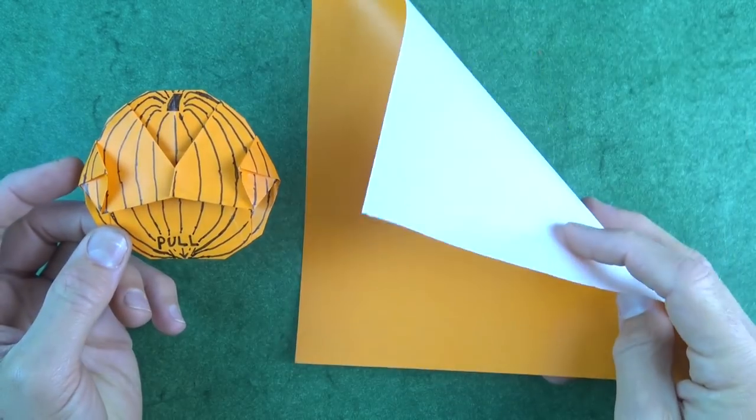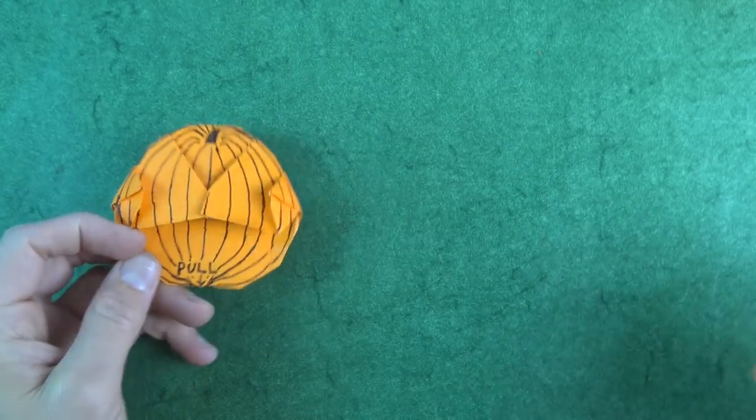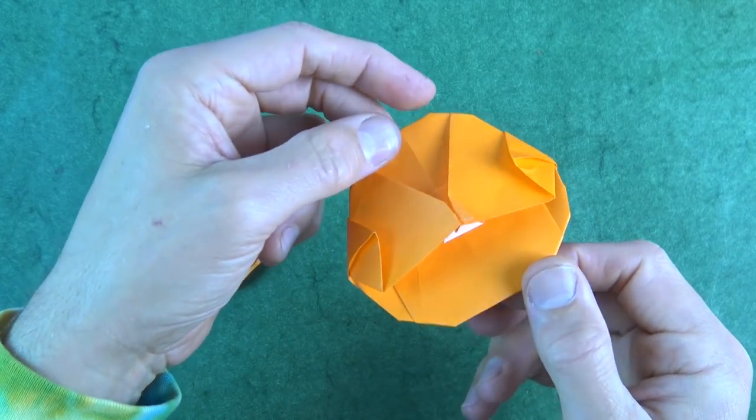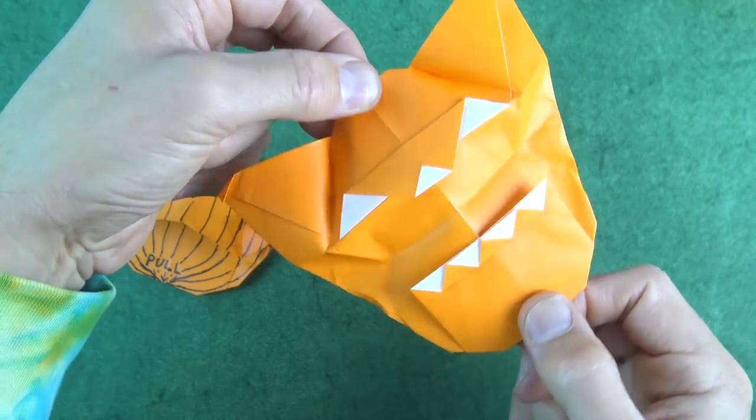So for this model, I used a 7-inch square of Kami. No taping, no gluing, but of course, there's drawing on it. But I think it looks cool even without the drawing. This looks like Jabba the Hutt. There's the mouth and the two eyes, and boing!